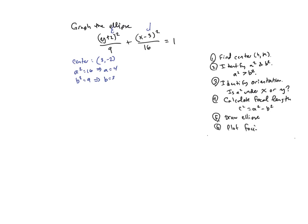The third thing is to identify the orientation. The way you tell which way it's stretching, horizontally or vertically, is you ask yourself which variable, x or y, was the a squared under. In this case a squared was 16 and that's under the x. So since the larger number is under the x, that means this is a horizontal ellipse. If the a squared had been under the y, then it would have been a vertical ellipse.